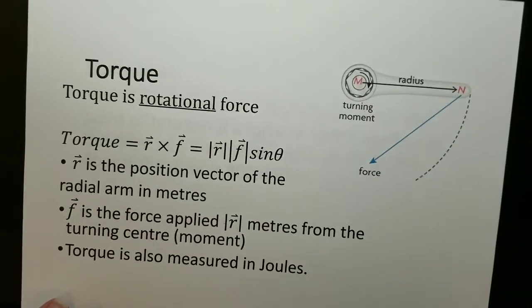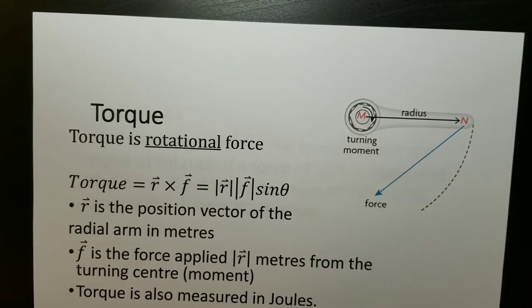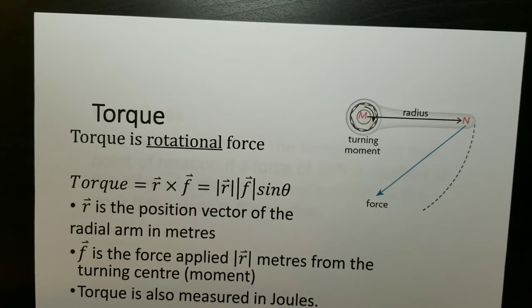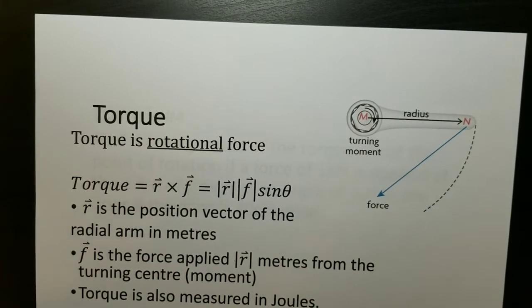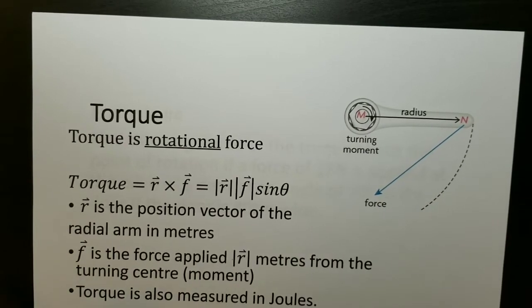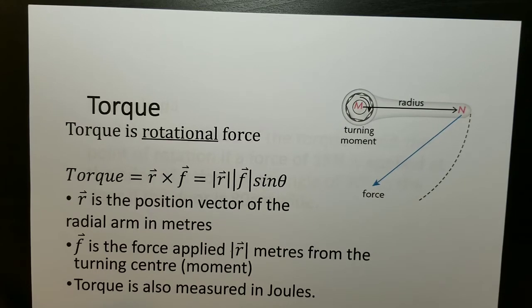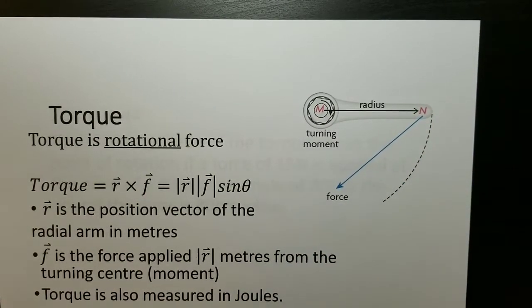I have one last example here, and this is an example of the cross product and application in real life. The last physics example here is torque. So torque is a rotational force. We know that forces are vectors and we know that the cross product gives us an actual vector. Torque is going to have a vector answer. Torque is going to be r cross f, where r is the position vector of the radial arm. Torque is the kind of thing that happens when you're turning things or rotating something. A common example that I like to look at is simply opening a door.